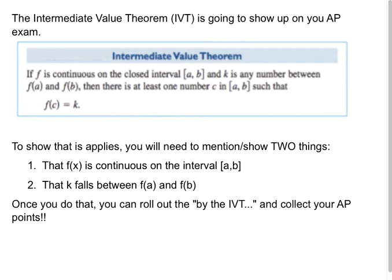So the Intermediate Value Theorem relies on two things being true: that f is continuous on a closed interval from a to b, and that k is some number between the two outputs at a and b, so f(b) and f(a). Then there is at least one number c somewhere in [a,b] such that f(c) equals k. So let's talk about what you would have to do if you saw this on an AP.